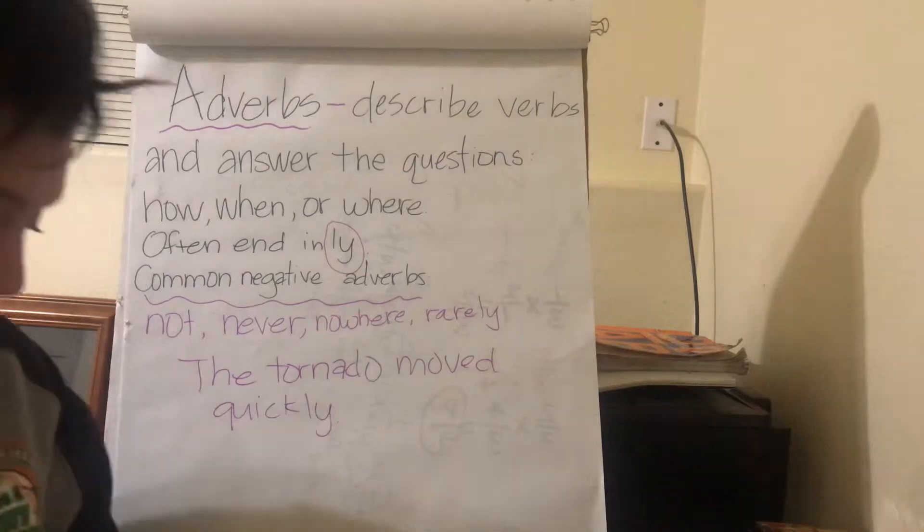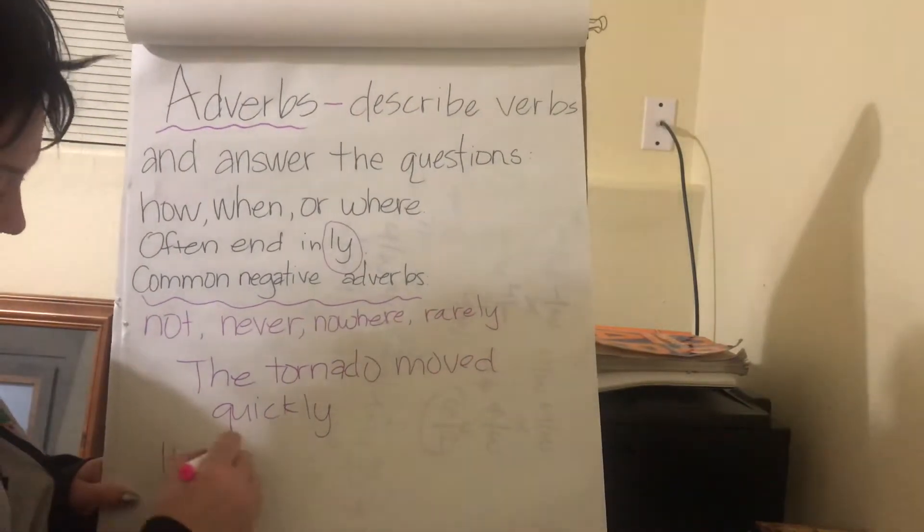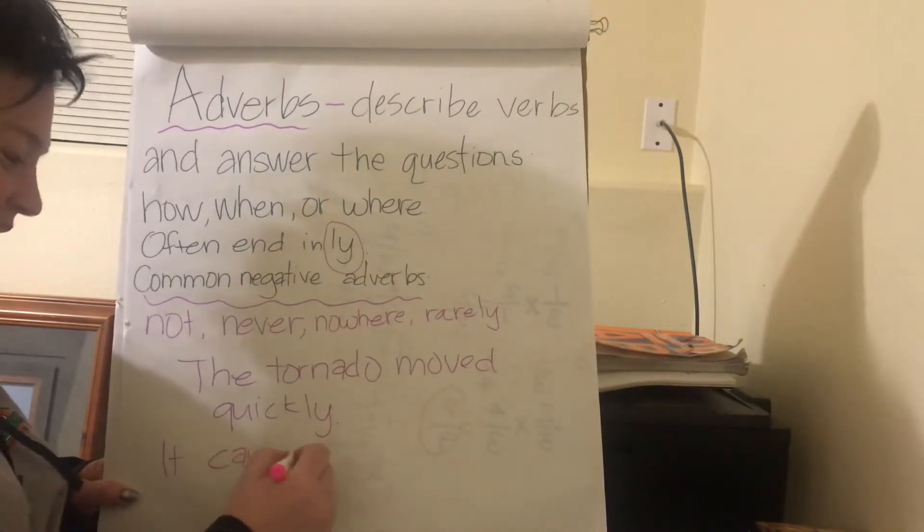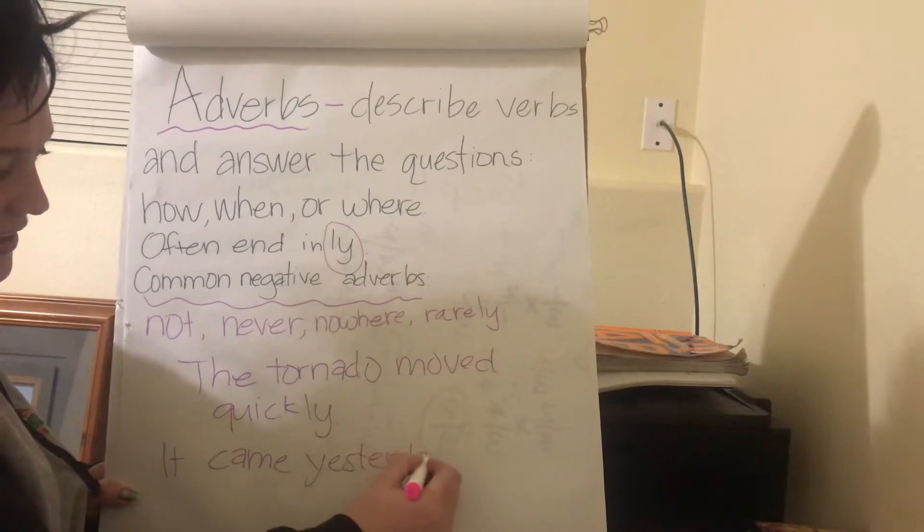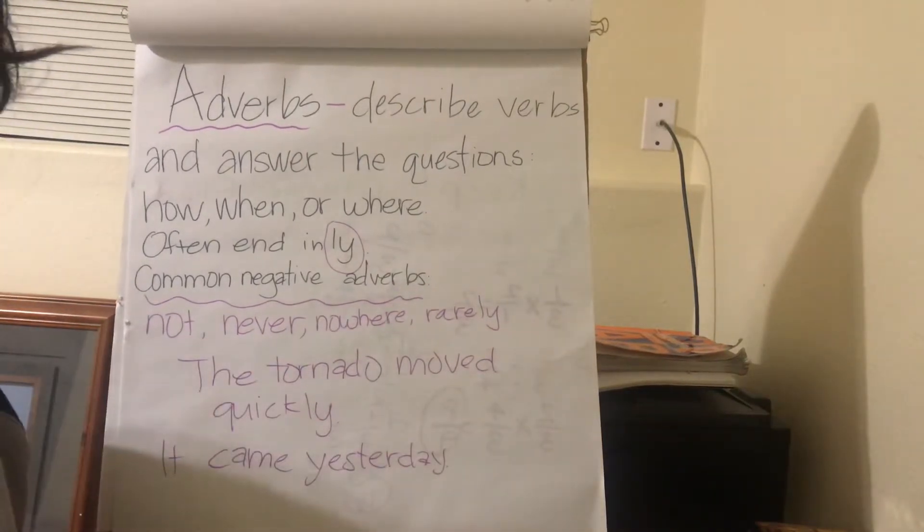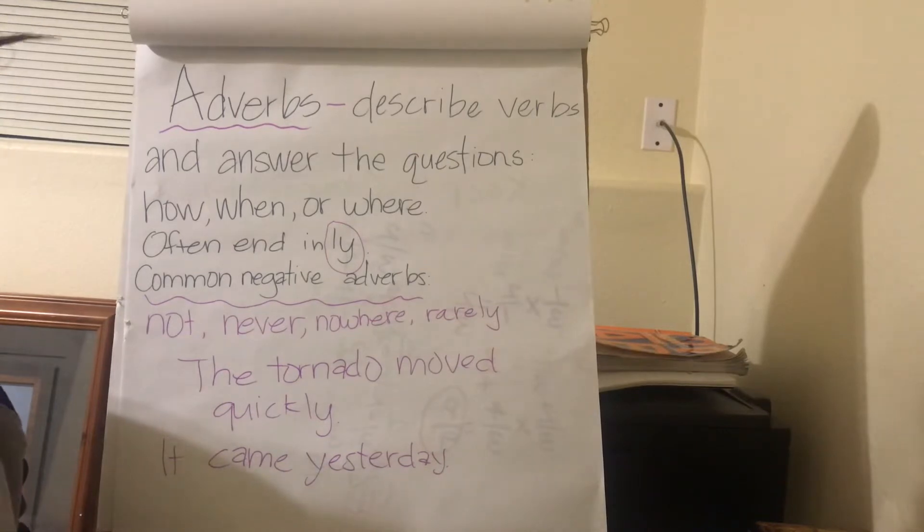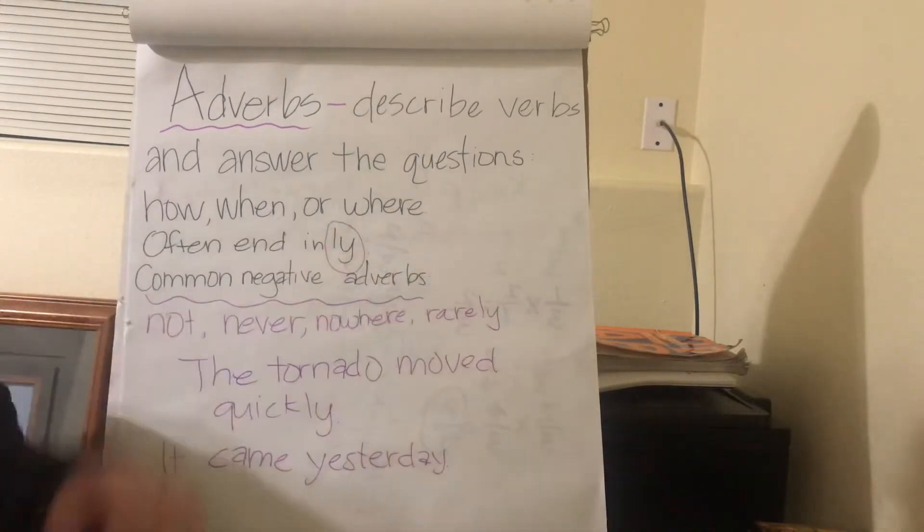How about this sentence: it came yesterday. And it is referring back to the tornado. So it came yesterday. What is our adverb telling us about our verb? Remember it's going to answer either how, when, or where.